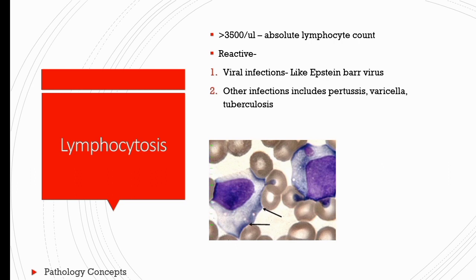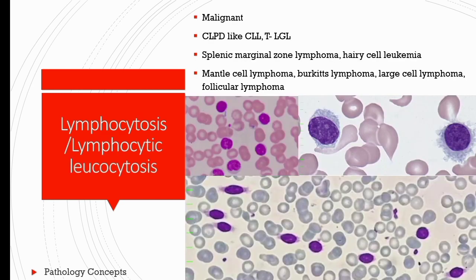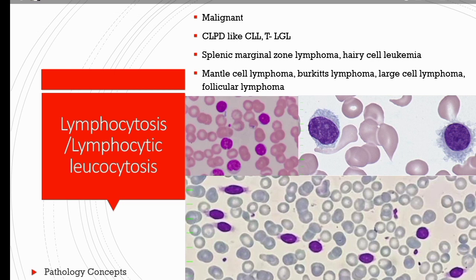Indentation of the lymphocyte cytoplasm by surrounding RBCs gives a characteristic appearance. Lymphocytosis may also be seen in other infections like pertussis, varicella, tuberculosis, drug-induced causes, or acute stress response. Persistent lymphocytosis seen along with monoclonal lymphocytes suggests malignancy — for example, chronic lymphoproliferative disorders like CLL. In CLL, lymphocytic leukocytosis is seen with mature-looking lymphocytic proliferation: round cells with small nuclei, coarse clumpy chromatin, and frequent smudge cells.